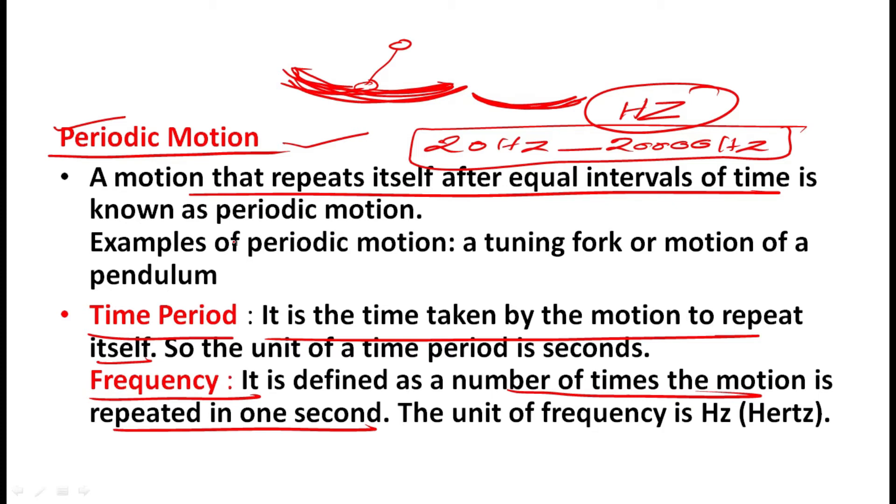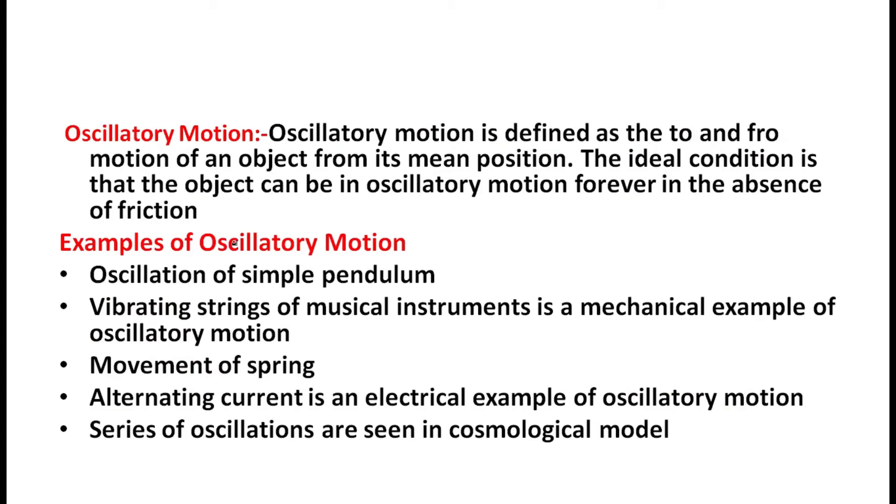So that is your next topic, oscillatory motion. This one is also particularly mentioned in your syllabus. Now question arises, what is oscillatory motion? It is defined as to and fro motion of an object. To and fro motion means oscillatory motion.